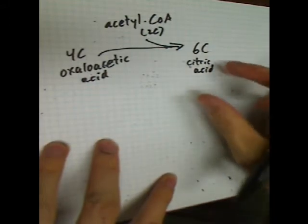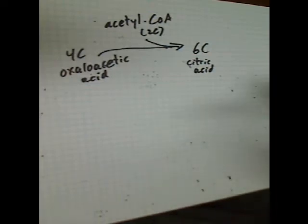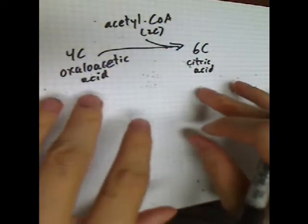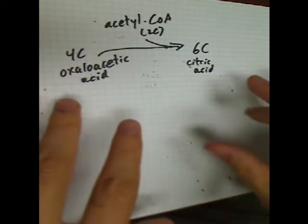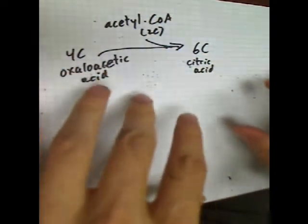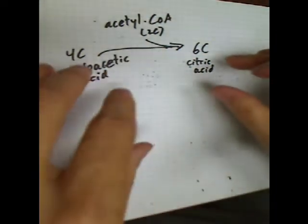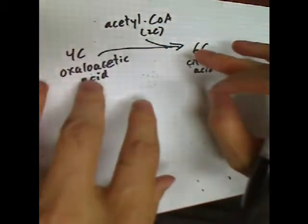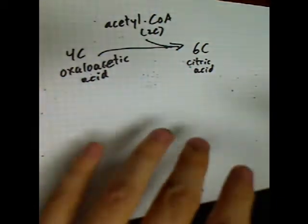That's why the Krebs cycle is also called the citric acid cycle. Now, in an introductory biology class, you're almost never required to remember the names or the structures of all the intermediate compounds in these biochemical pathways. So I'm not going to write the names of the intermediates. What is important is that you keep track of how many carbons are involved in the different molecules and what are the things that come in and come out.